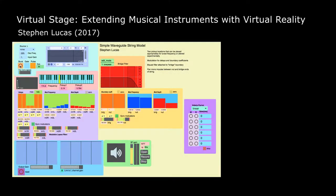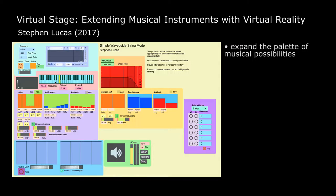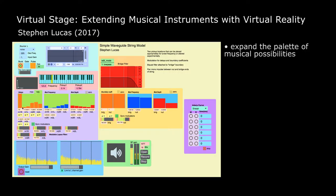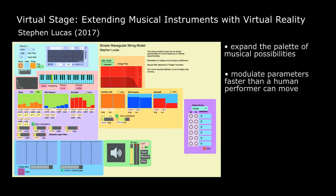Acoustic physical modeling is a technique of creating computer musical instruments that resemble real-world physics. However, these instruments expand the palette of musical possibilities because they can expand the physical limitations of the real world. For example, a string model's properties can be modulated faster than a human performer can even move, creating interesting sonic qualities.